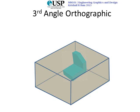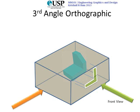In third angle orthographic projection the rule is very simple: the plane that you are viewing from is the plane on which the views will go. If you are viewing from the front, your view will be made on that plane itself - we draw on the nearest plane. The plane is in between the viewer and the object. For the left end view, looking from the left hand side, the view will be made on the left hand side. The left hand view is drawn on the left hand face.